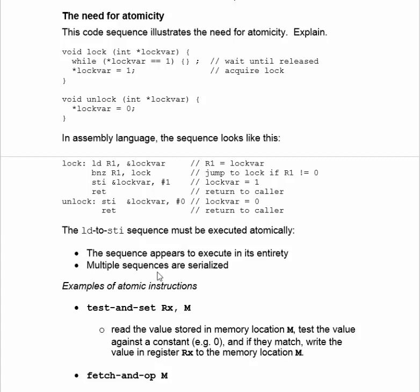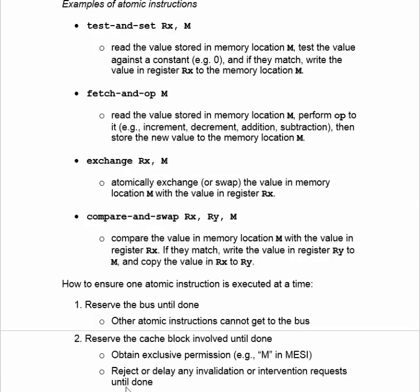We'll talk a little bit later about instructions that do have that property. But let's also note that multiple sequences — if you have multiple threads trying to get into the lock — they are serialized, so one can execute and then the next one executes, but they can't be executing at the same time. Ordinary memory operations don't fill the bill of being atomic: when you read a value of a memory location, you can't write the value until you execute another instruction. But by the time you execute that other instruction, any other thread could have gotten in and read that same value. So you've got to read and write atomically.